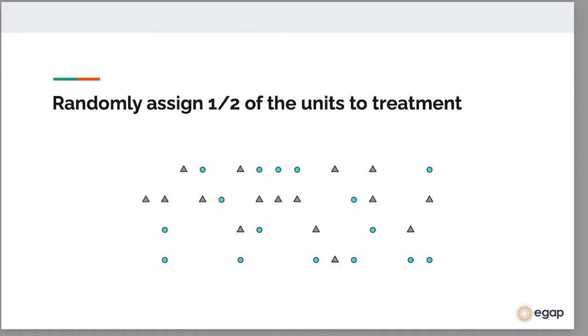Randomization, or the random assignment of treatment, is assigning the units in whatever sample we have—this could be generated by random sampling or not—to treatment conditions with known probability between 0 and 1. That known probability means that no unit is guaranteed to be in a particular treatment condition.